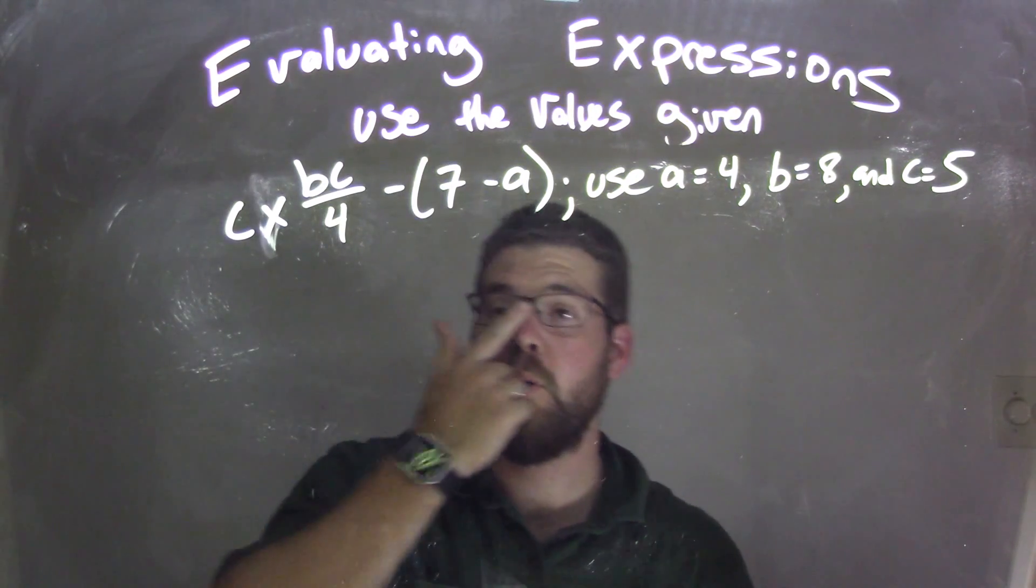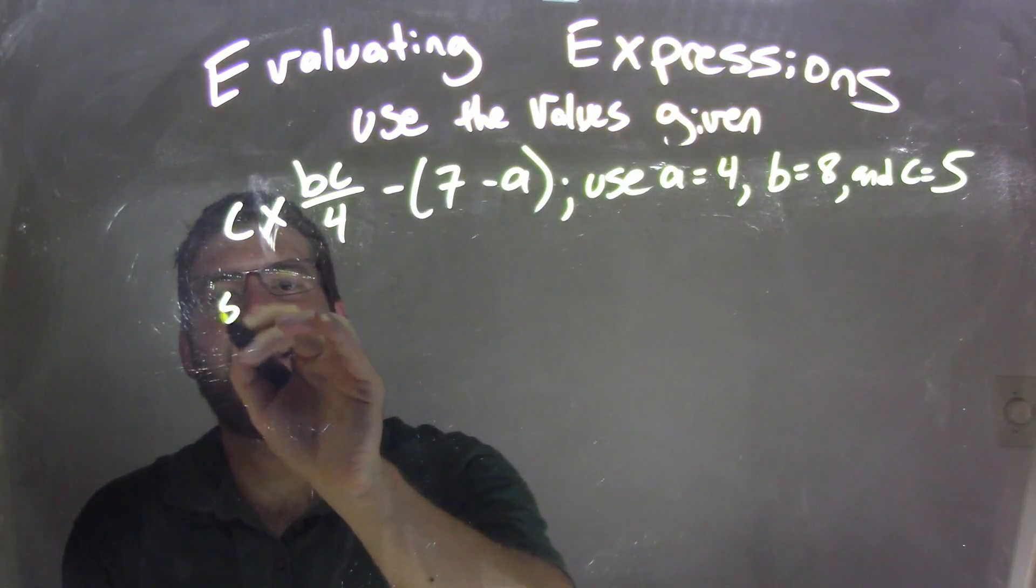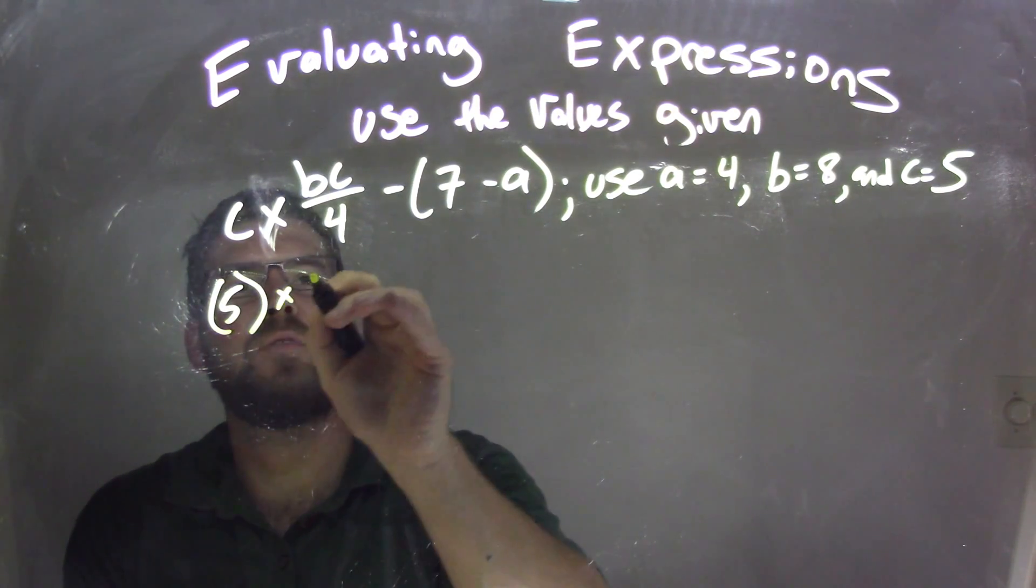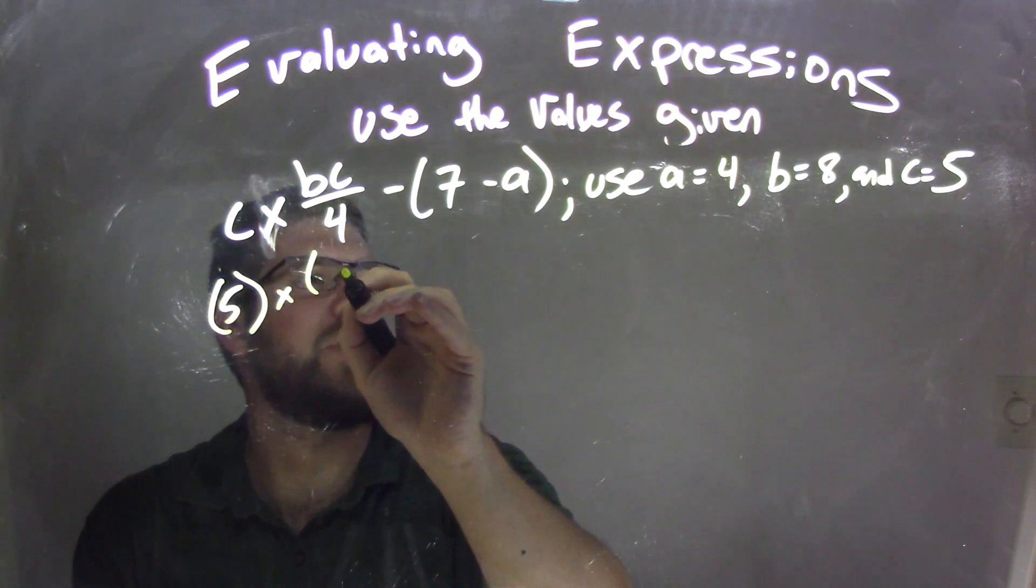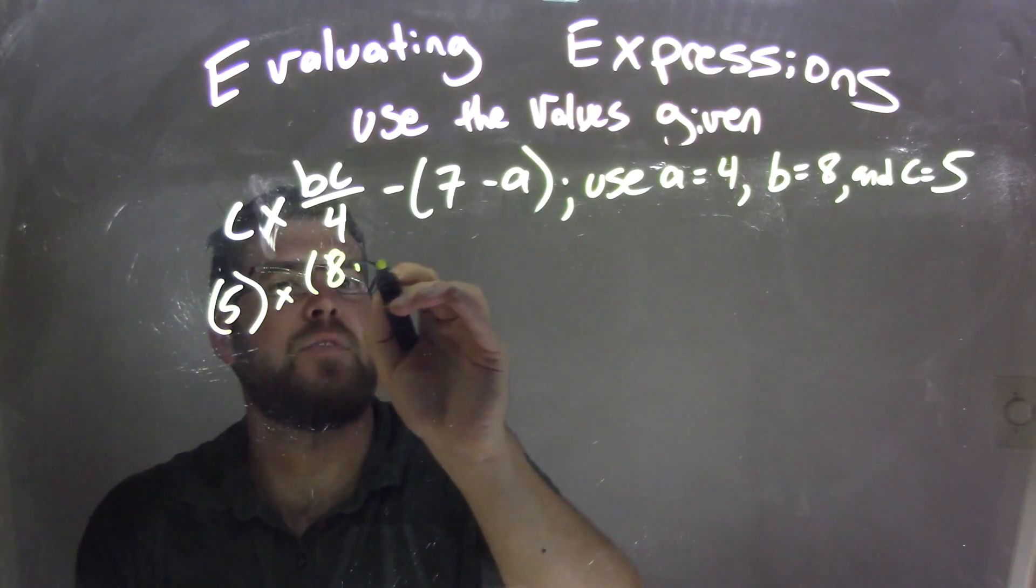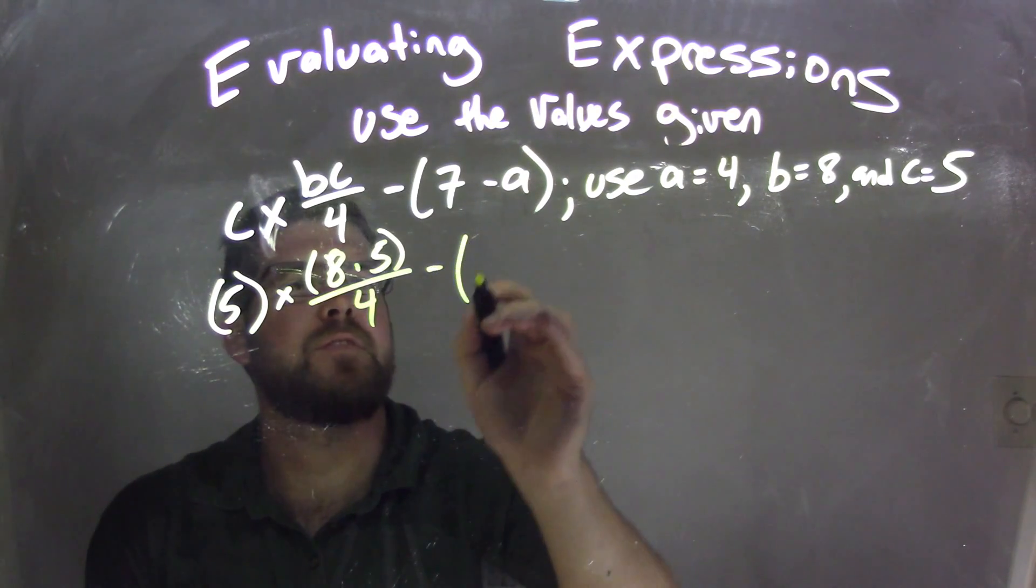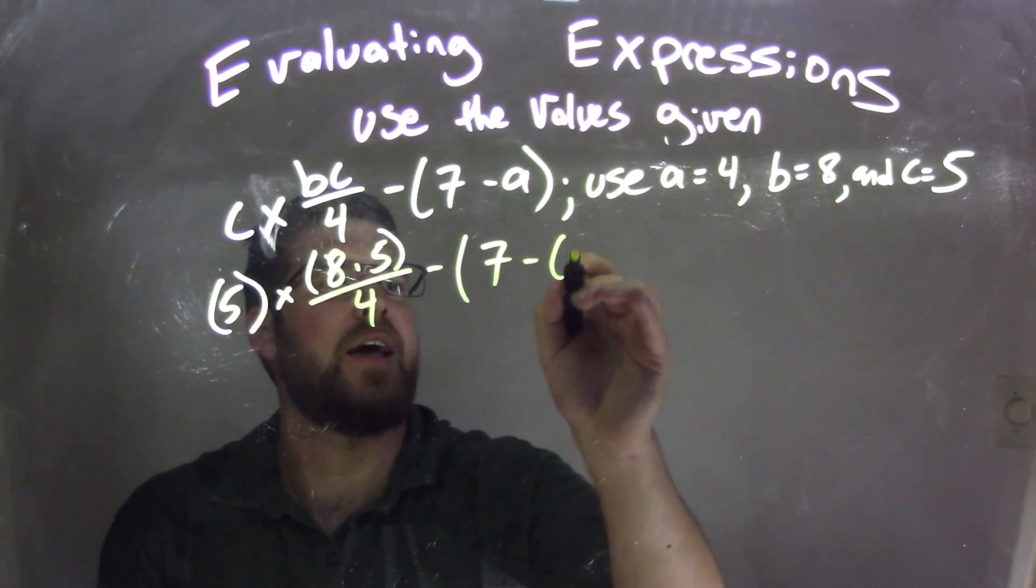Okay, so our first step is always let's substitute our values. c is 5, that is first, times b times c, b is 8, and here I'm going to do this, 8 times c, which is 5, over 4, minus 7 minus a, which is 4.